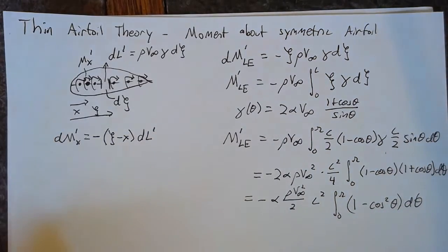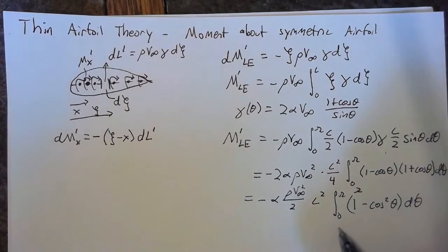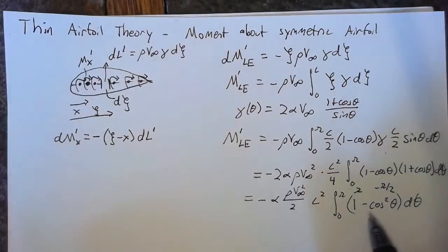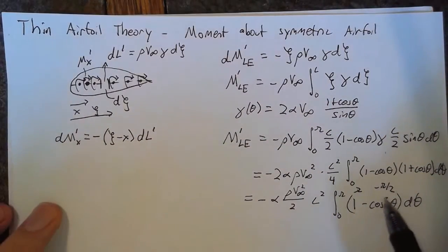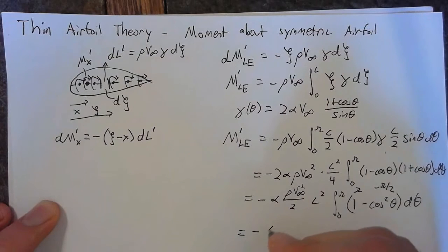Now the integral from 0 to π of 1 is equal to π, and the integral from 0 to π of cos² θ is equal to π/2. So this entire thing becomes π/2. We can say that this is -α q∞ c² π/2.